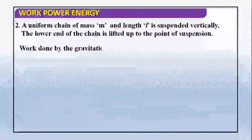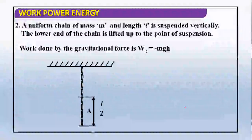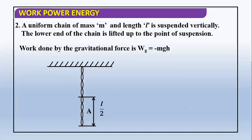A uniform chain of mass m and length l is suspended vertically. The lower end of the chain is lifted up to the point of suspension. Work done by gravitational force W_g is minus mgL/4. We will see why it is negative and what will be its value.